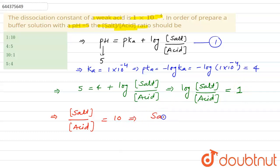So the ratio of concentration of salt to the concentration of acid would be equal to 10 by 1, or 10 ratio 1. This would be our answer. In the options, we have third option as our answer.